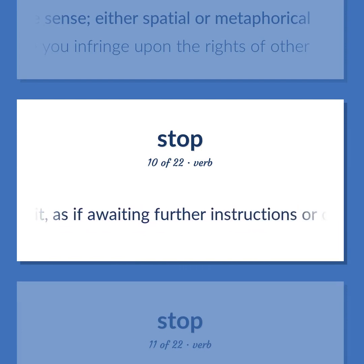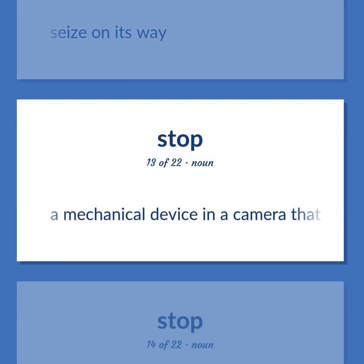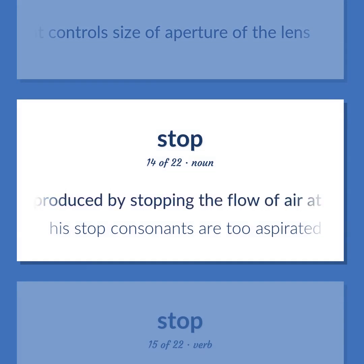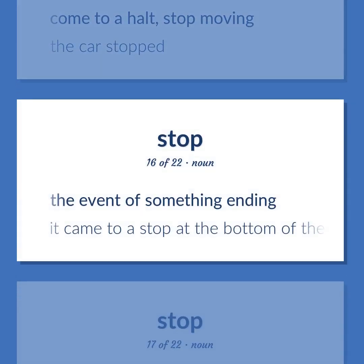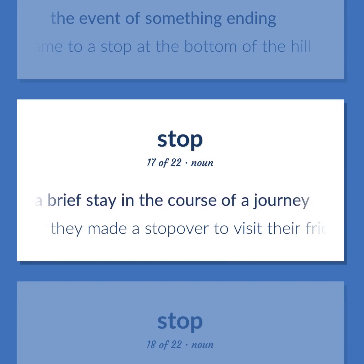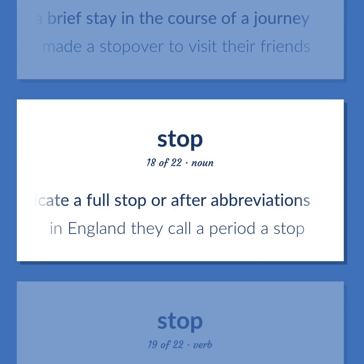Stop: Stop and wait, as if awaiting further instructions or developments. Interrupt a trip — we stopped at Aunt Mary's house. A mechanical device in a camera that controls size of aperture of the lens. A consonant produced by stopping the flow of air at some point and suddenly releasing it — his stop consonants are too aspirated. Come to a halt; stop moving — the car stopped. The event of something ending — it came to a stop at the bottom of the hill. A brief stay in the course of a journey — they made a stopover to visit their friends. A punctuation mark placed at the end of a declarative sentence to indicate a full stop, or after abbreviations — in England they call a period a stop.